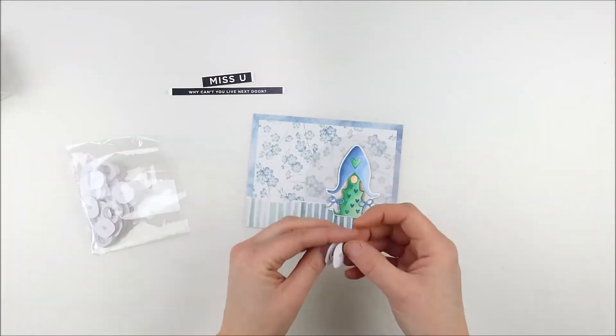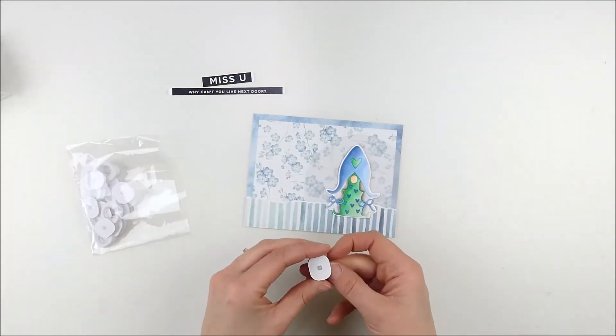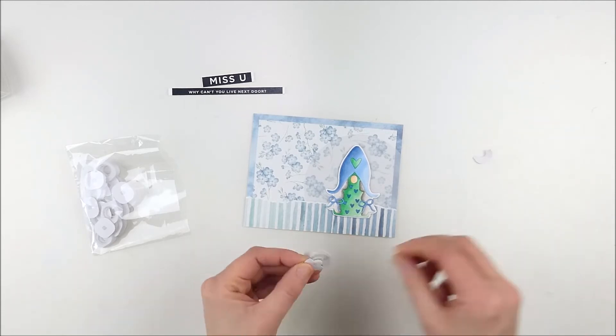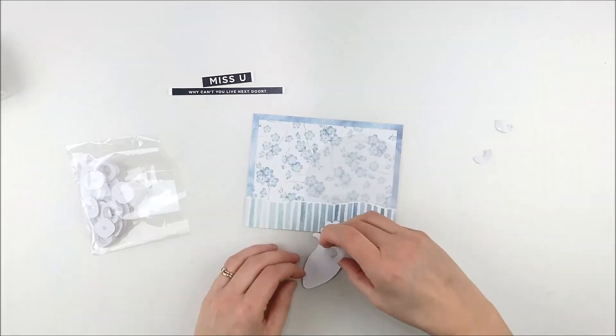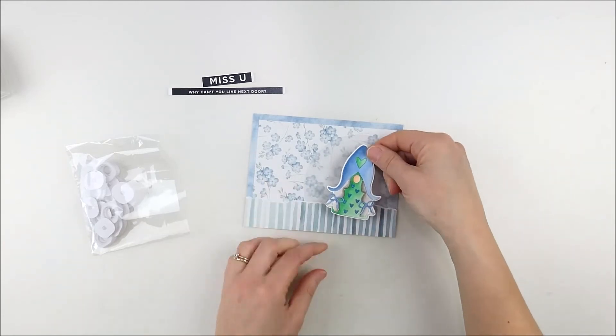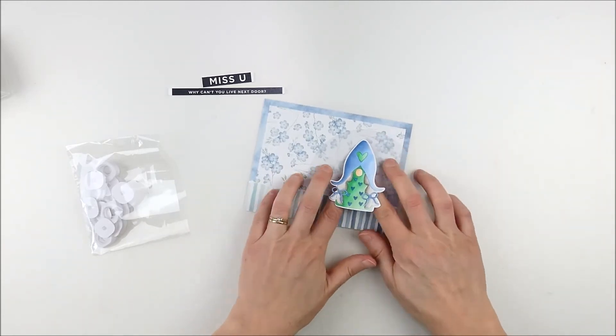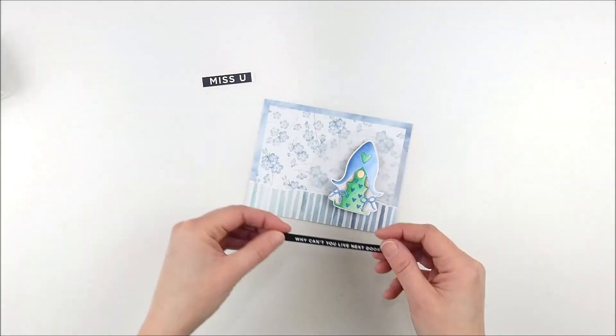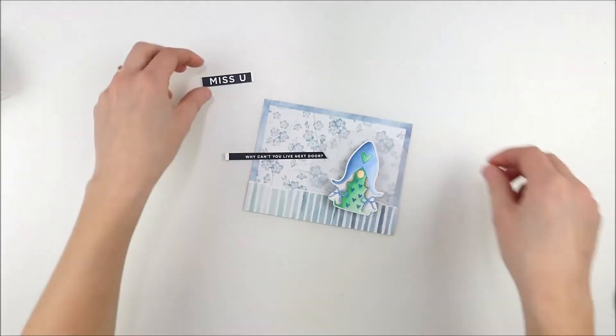All right, now I started playing with where I wanted to attach that gnome and I decided it would be kind of fun to tuck it on an action wobble there. So these are some mini action wobbles that I got from Simon Says, perfect size to tuck back on there. And look how fun, just sits and wobbles and dances now.